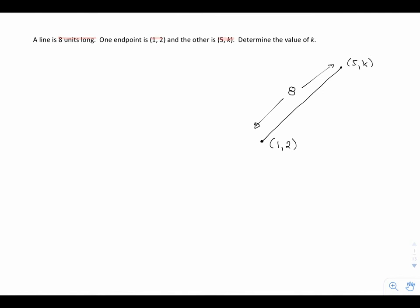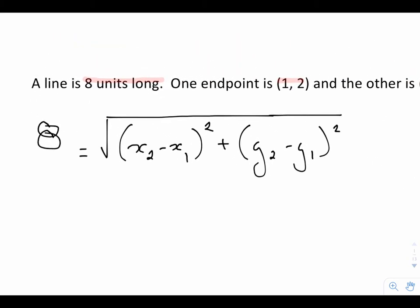So here's a case where I have my length, but I do not know what the other endpoint is. So what do I do? I'm going to use my distance formula and apply it with the points (1,2) and (5,k), and replace my d value with 8, because I know the distance is 8 units.